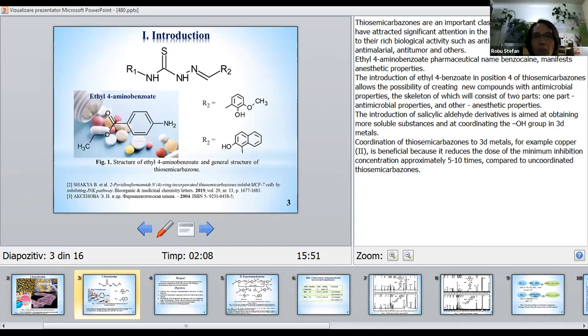Ethyl-4-amino-benzoate, pharmaceutically named benzocaine, manifests anesthetic properties. The introduction of ethyl-4-benzoate in position 4 of thiosemicarbazones allows the possibility of creating new compounds with antimicrobial properties, the skeleton of which will consist of two parts, one part antimicrobial properties and other anesthetic properties.